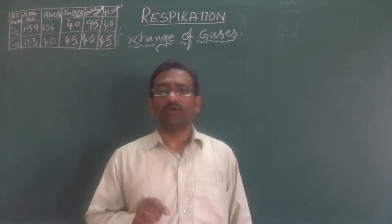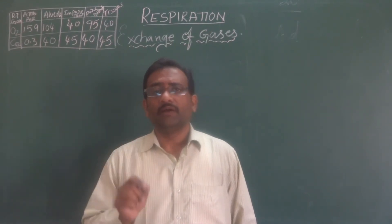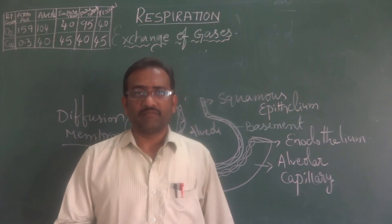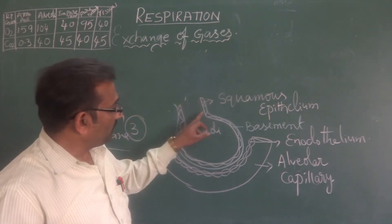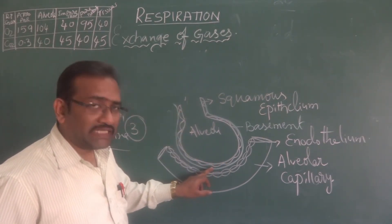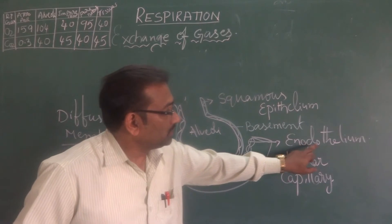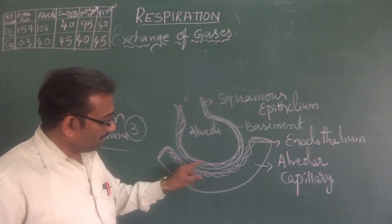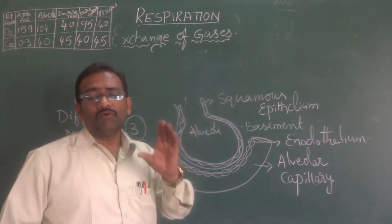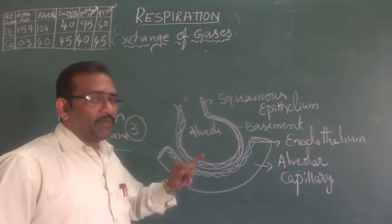The exchange of gases from alveoli to the blood capillary occurs through the diffusion membrane. The diffusion membrane is made up of three layers: the first layer is the alveolar squamous epithelial membrane, the middle layer is the basement membrane, and the third layer is the alveolar capillaries endothelium membrane. These three layers together behave as a diffusion membrane.